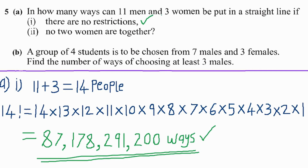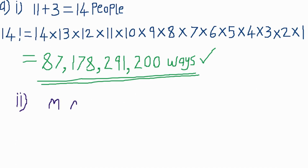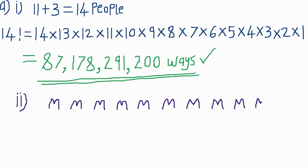Now let's go to roman numeral two. It states: in how many ways can 11 men and 3 women be put in a straight line if no two women are together? The condition is that no two women must be together. In such a case, the number of women must be less than or equal to that of men — and yes, 3 is less than 11, so we can proceed. We first consider the men: we have 11 men.